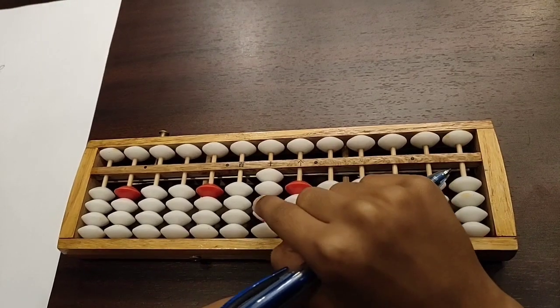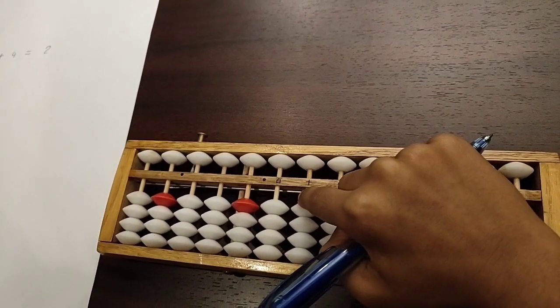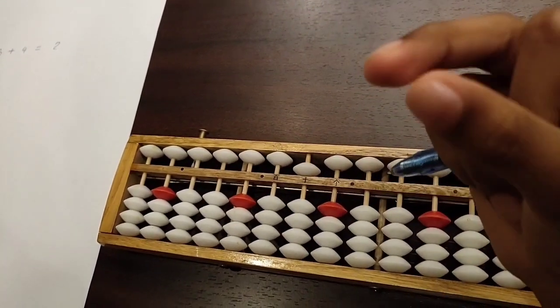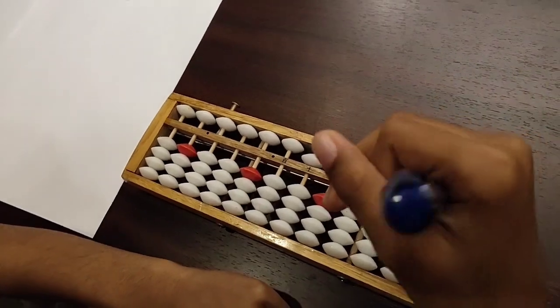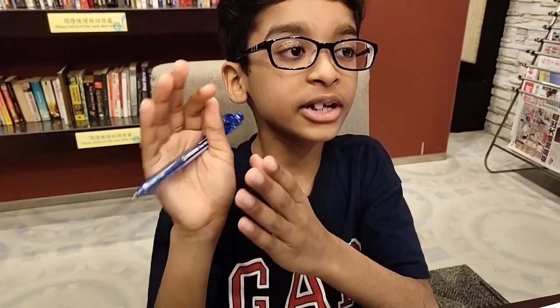So you have to minus those 2 beads with your pointer finger and move the top bead down with your middle finger. Because the method is minus 2 plus 5. Because 5 minus 2 equals 3.